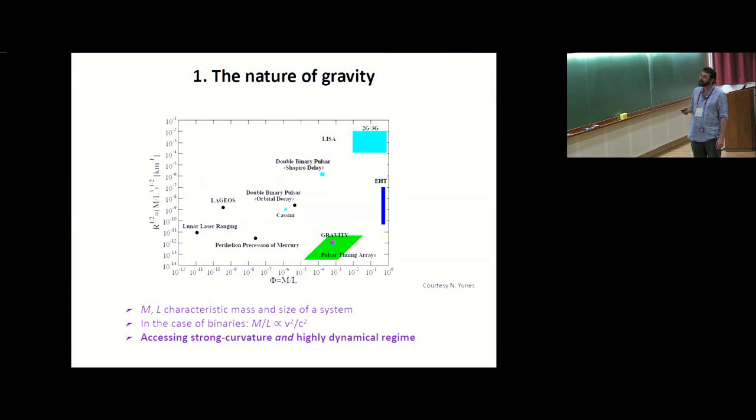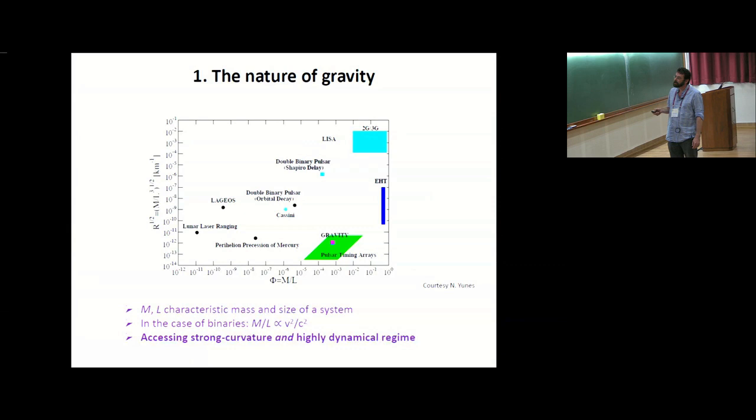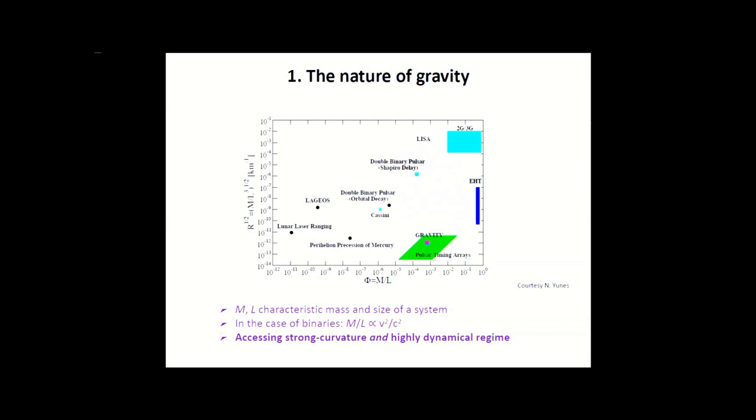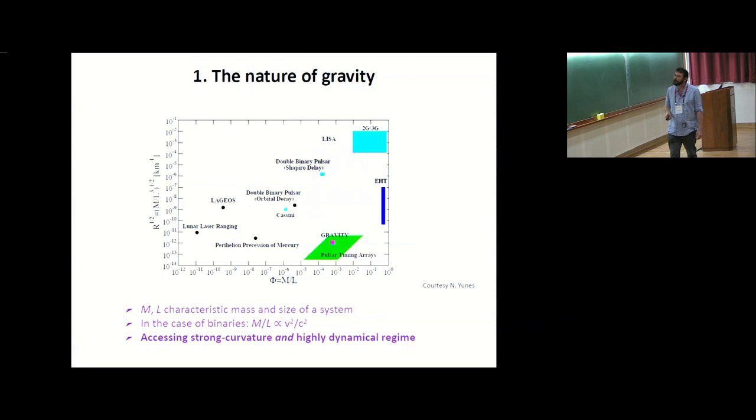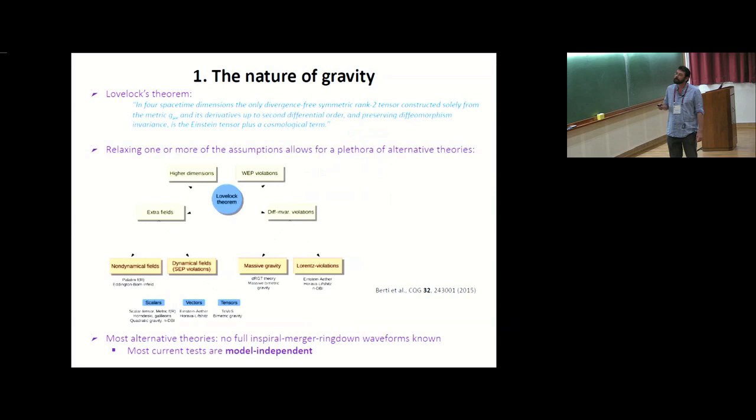One is the nature of gravity. If general relativity is incorrect, even at the classical level, which is possible, then what alternative theories can we look for? This plot is rather telling. Let me tell you what you're looking at. You have an M and an L here, which are the mass and the characteristic size of some system. The y-axis gives you a measure of the strength of space-time curvature.